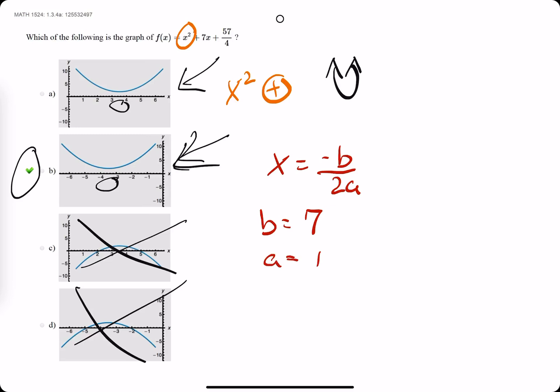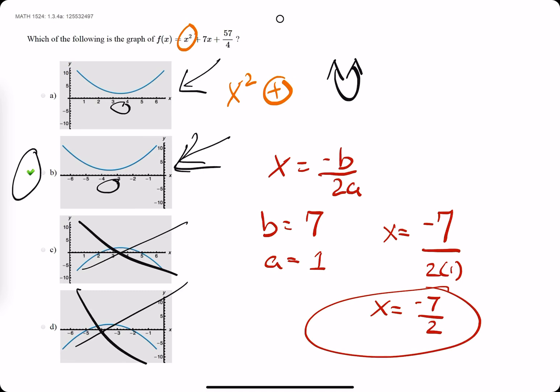And our a value is a nice positive 1. So we calculate negative b over 2a, we get negative 7 over 2 times 1. In other words, our x value is negative 7 halves, which means the vertex should lie right at negative 7 halves, which it does in option b, so that's why b is correct.